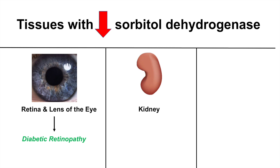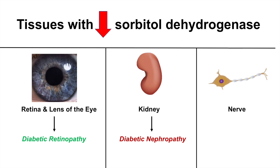Another part of the body with very low sorbitol dehydrogenase activity is the kidney, which is why we get diabetic nephropathy. During diabetes, high glucose causes increased sorbitol production, but we cannot convert that sorbitol into fructose properly, causing damage to the kidney. Similarly, the nerves of the body have very low sorbitol dehydrogenase activity, which is why we see diabetic neuropathy — the nerves cannot convert sorbitol into fructose to compensate for sorbitol accumulation during diabetes.